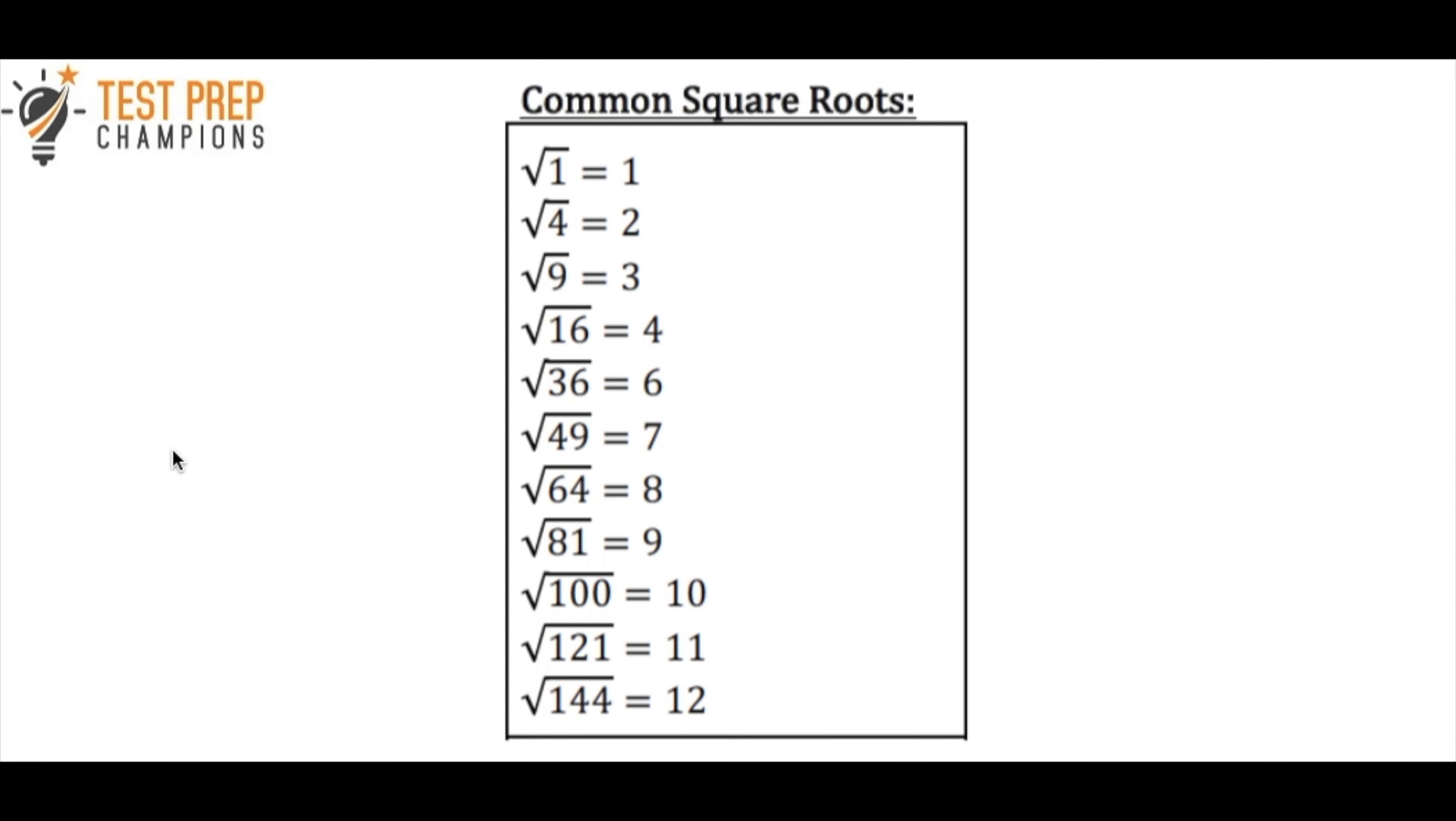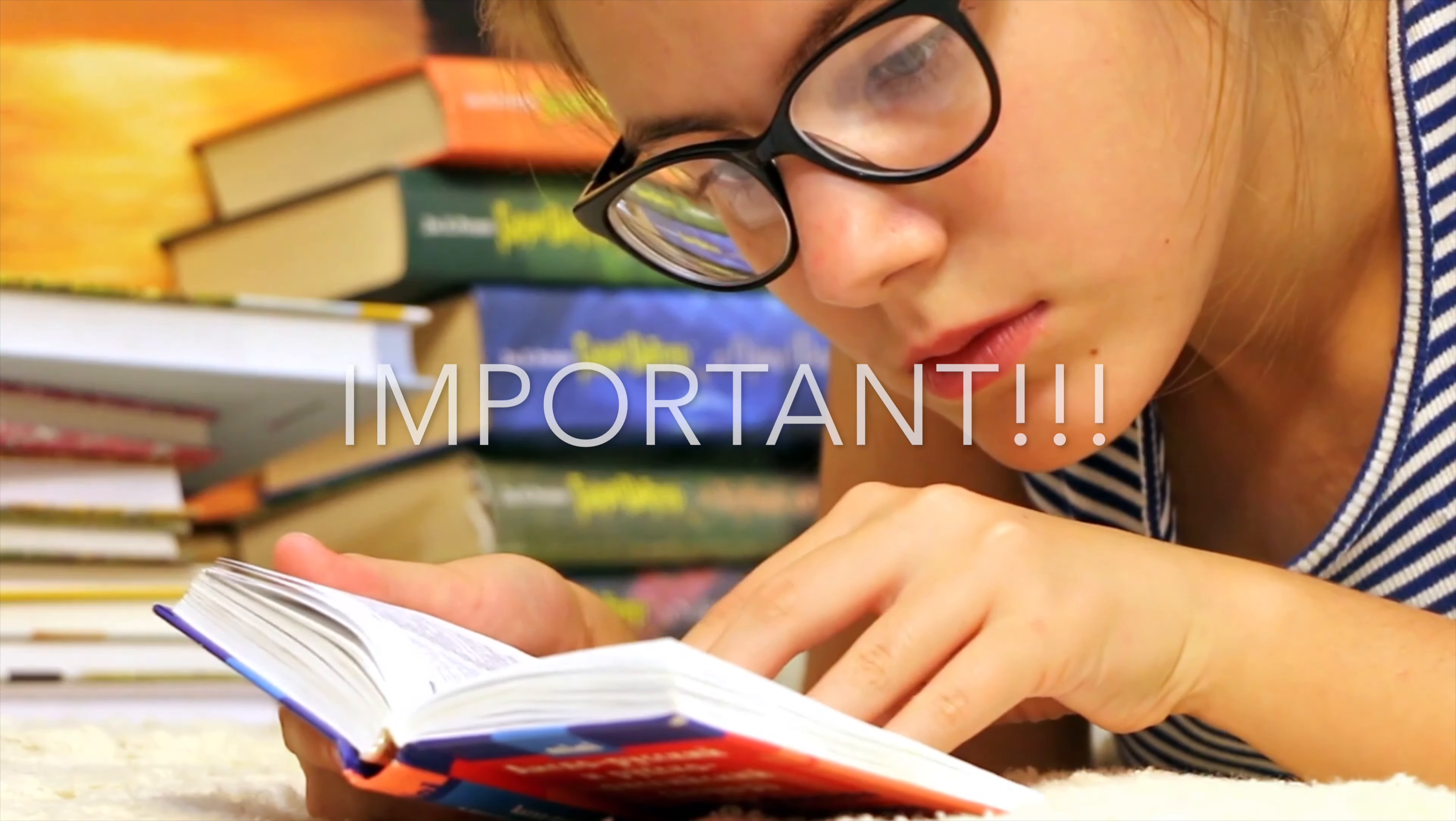So right now you might be wondering how you're supposed to remember how to find the square roots. So to make life simple I've given you this list of some common square roots. Now you can just memorize these, add them to your notes, or just tuck these away in the back of your head that these are all good to know because they're going to come up a lot. And this list comes right out of my GED Math Champions Guide. You can get that down below.